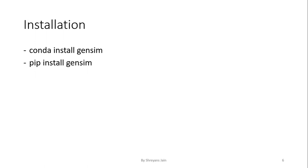Before we move to understanding the core concepts in detail, I would request you to download the Gensim package using one of the commands. Both conda install and pip install will work on the Anaconda prompt. If you are not using Anaconda, then you can use the command prompt to install Gensim using the pip install command. Further in this tutorial, we will understand what is corpus, vector, and model in detail. We will also see what are the different transformation techniques, similarity techniques, and which model can be used for what purpose, as well as vector representation. I would recommend you use Jupyter Notebook to run the codes I will be showing in the next part.